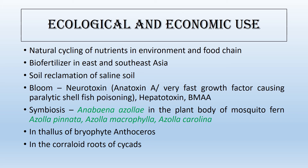Anabaena is a primary producer in the food chain — planktonic Anabaena is fed by zooplanktons, which are in turn eaten by certain micro-invertebrates, forming a complete food chain. One concern is that Anabaena produces toxins, especially neurotoxins, hepatotoxins, and also BMAA, a non-protein amino acid. In excess amounts, BMAA causes metabolic problems.